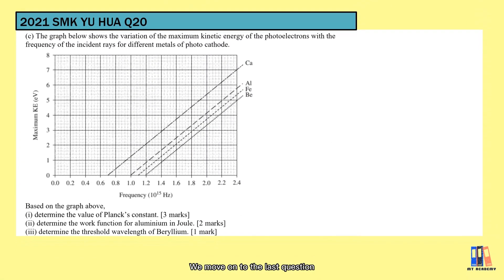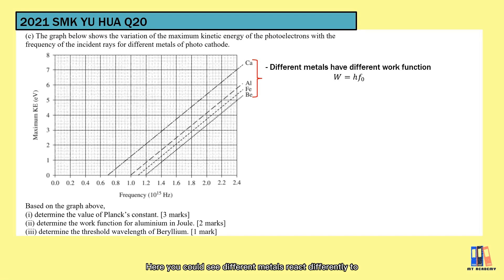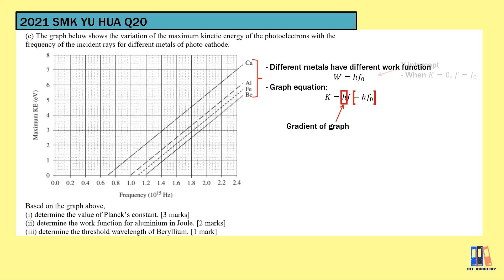We move on to the last question which is also from SMK Yuhua. This question is quite interesting that it is a graph of kinetic energy against the frequency which is a common graph we use in photoelectric experiments. Here you can see different metals react differently to different frequency of light. But there's one thing is common between them and that is the gradient of the graph. Let's discuss about the graph equation. We learned the equation of K is equal to hf minus W or K equal to hf minus hf0. Work function is a constant value for each metal. Compared to y equal to mx plus c, the gradient of the graph is the Planck constant which is why all the metals are showing the same gradient since the Planck constant is a constant value. For the y-intercept which is not shown in the graph, it is a negative value which is the work function. When the kinetic energy is zero, the x-intercept shown in the graph is the threshold frequency.